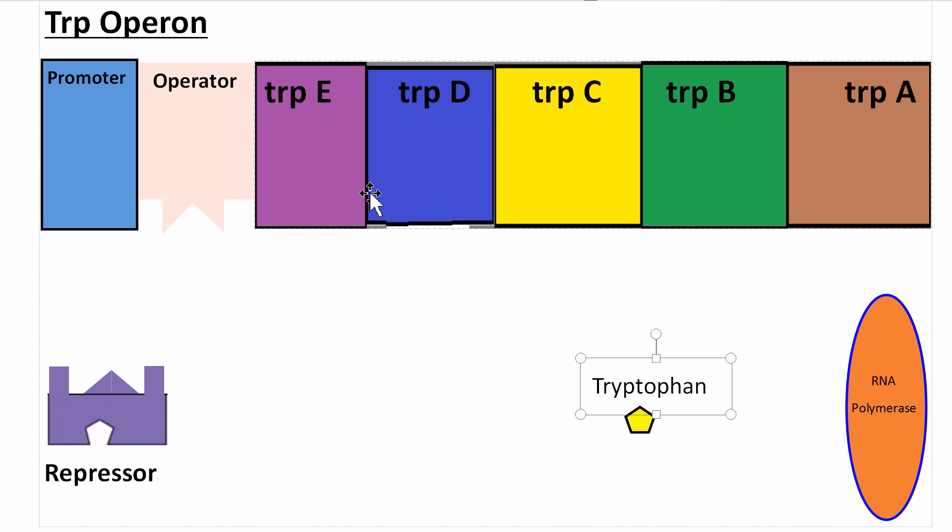Moving on, we have the genes of the trp operon: trp E, trp D, trp C, trp B, and trp A. We also have the promoter region where RNA polymerase can attach on.